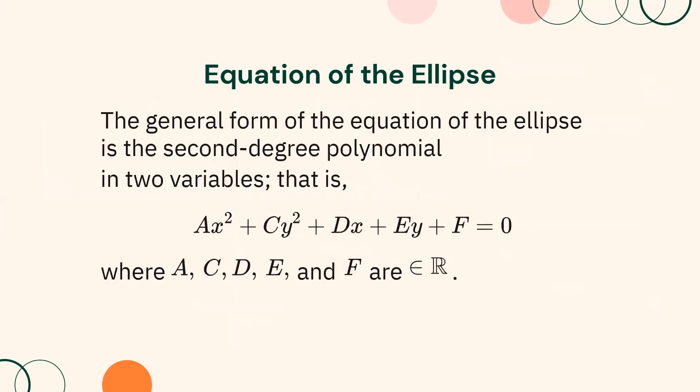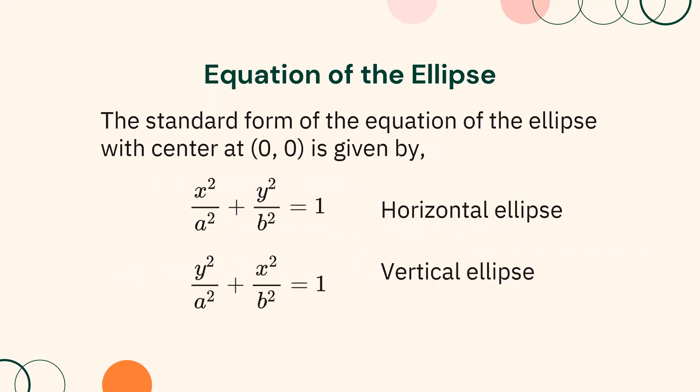The general form of the equation of the ellipse is the second-degree polynomial in two variables: AX squared plus CY squared plus DX plus EY plus F equals 0, where A, C, D, E, and F are elements of real numbers. Moreover, the standard form of the equation of the ellipse with center at (0, 0) is given by the expressions shown on screen.